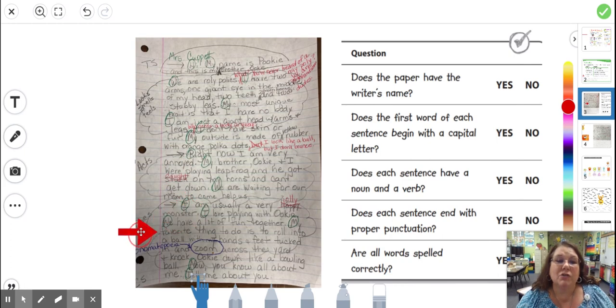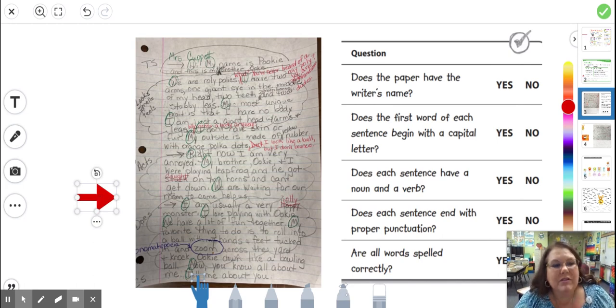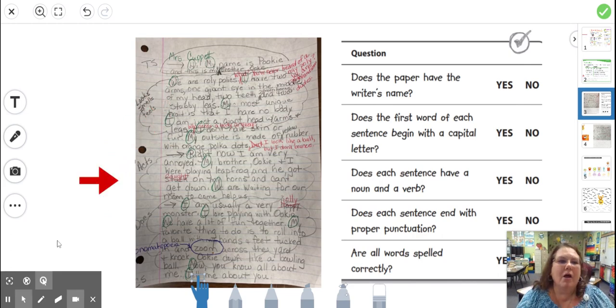If I circle the first letter and it's not capitalized, I know I've made a mistake. Because the beginning of every sentence needs to be capitalized. So I'm going and I'm checking. All right, I think you're back.